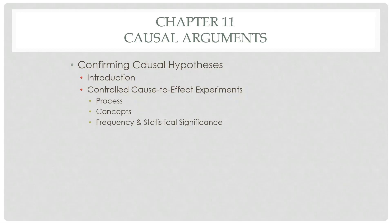As a quick recap of confirming causal hypotheses in populations, we looked at the controlled cause-to-effect experiment, which is essentially the gold standard in doing scientific work. You're wondering what a cause does — what is the effect of the cause when you already know the cause. What defines a controlled cause-to-effect experiment is this.